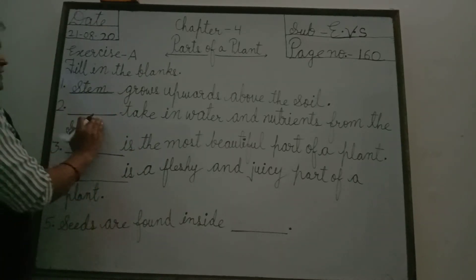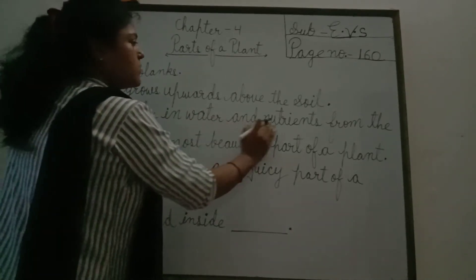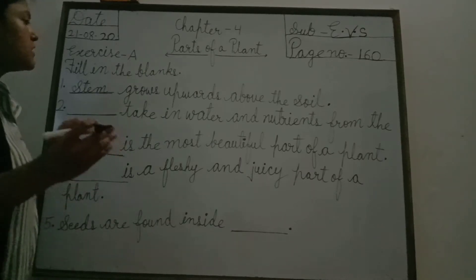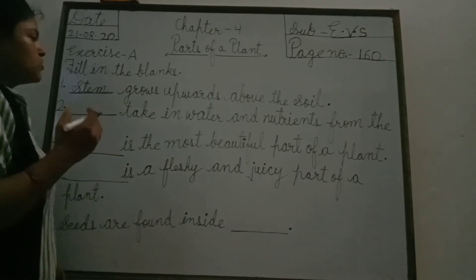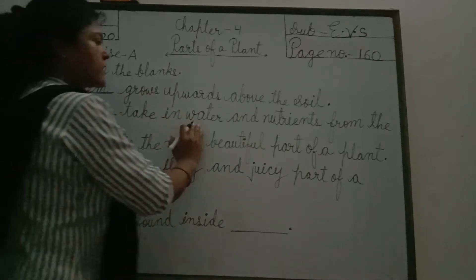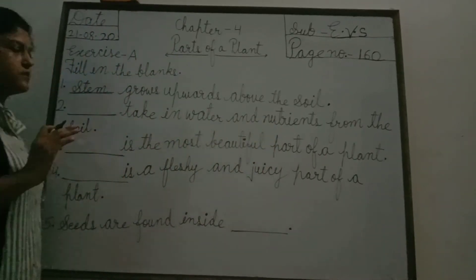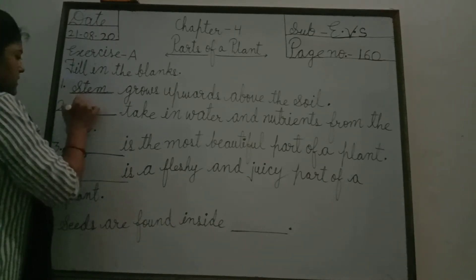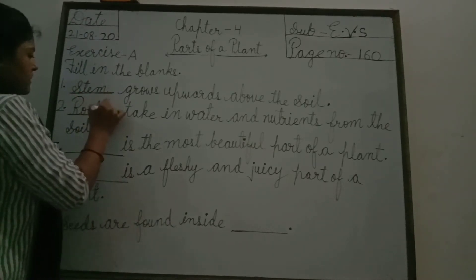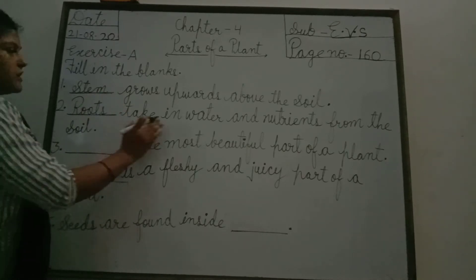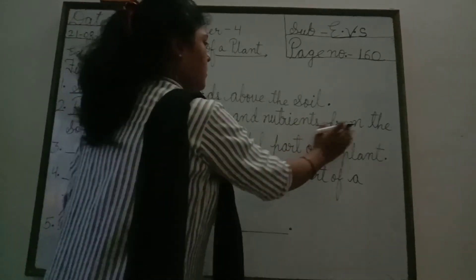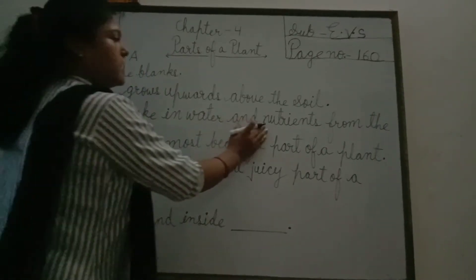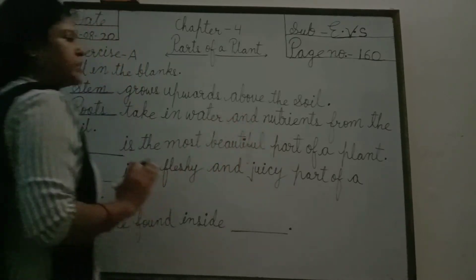Question number 2 is: dash take in water and nutrients from the soil. Plants ke aise koon se part hain jho soil me se water and nutrients ko absorb karate hain? The answer is roots. The spelling is R-O-O-P-S. Roots take in water and nutrients from the soil. Roots soil me se water and nutrients ko absorb karate hain.